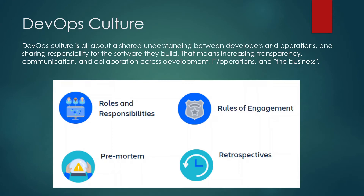First is roles and responsibilities. Now that development and operations are collaborating closely, it's time to clarify who does what and identify any skill gaps. This is important both early in your DevOps journey and whenever your team's membership changes. You want to define boundaries clearly so developers and operations aren't fighting over responsibilities.